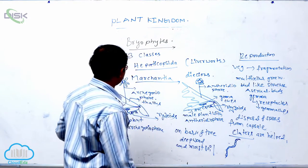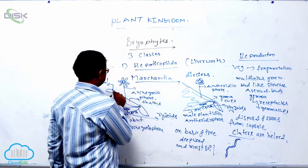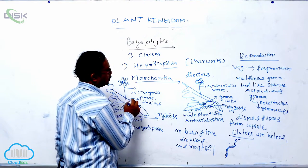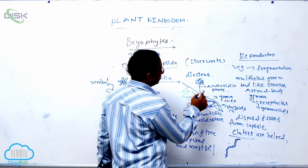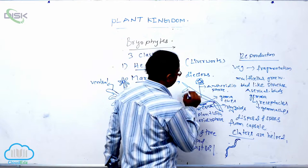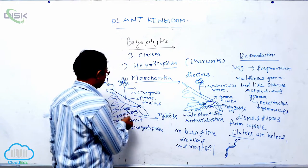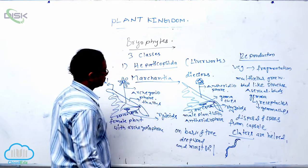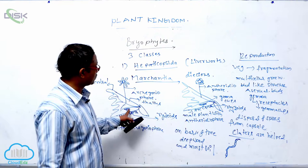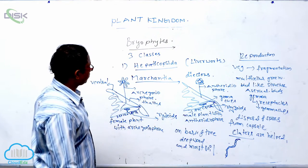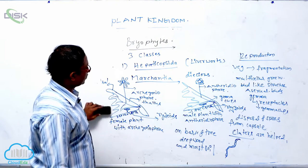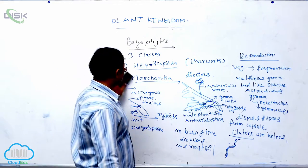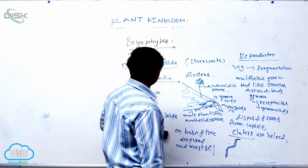Marchantia is known as an archegoniate and is a female plant. It is dorsi-ventrally differentiated, has rhizoids, and gemma cups. This concludes the discussion about the class Hepaticopsida, covering Marchantia.